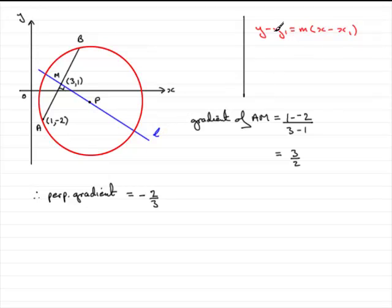So now we're in a position then to use the general equation of a line. Therefore, equation of L is going to be y minus y1, y1 then, point on the line is going to be the point M, so we can take the y coordinate as being 1, equals the gradient minus 2 thirds, and then x minus x1, so x minus the x coordinate which is 3.